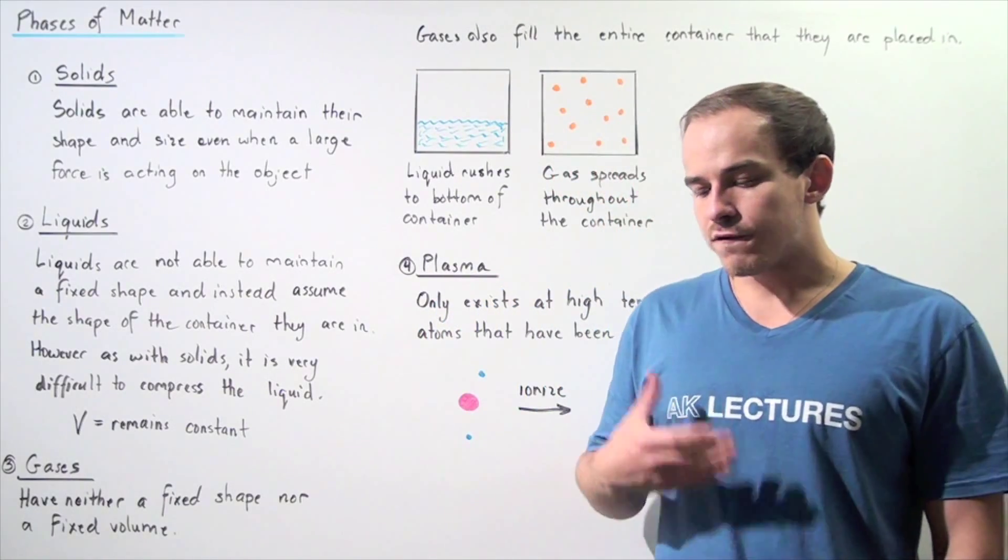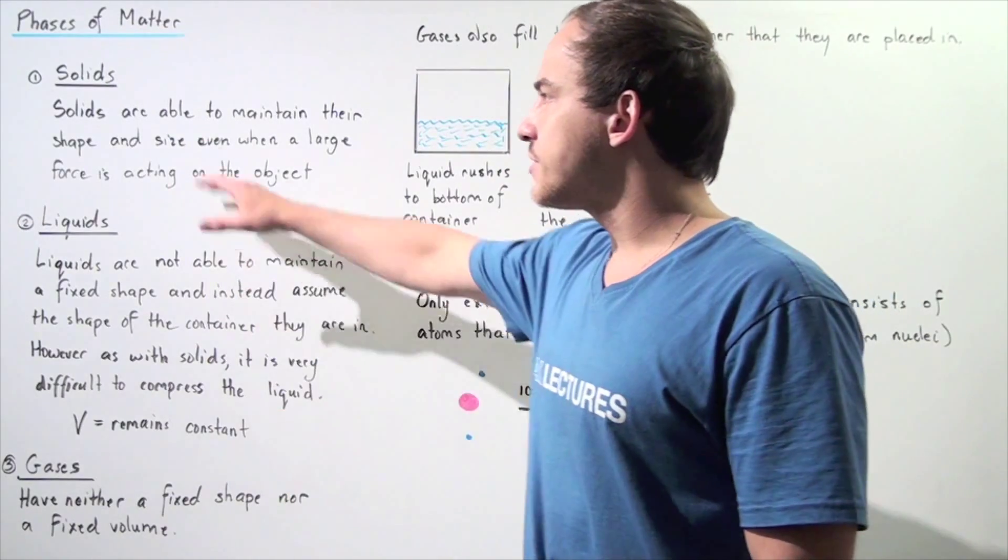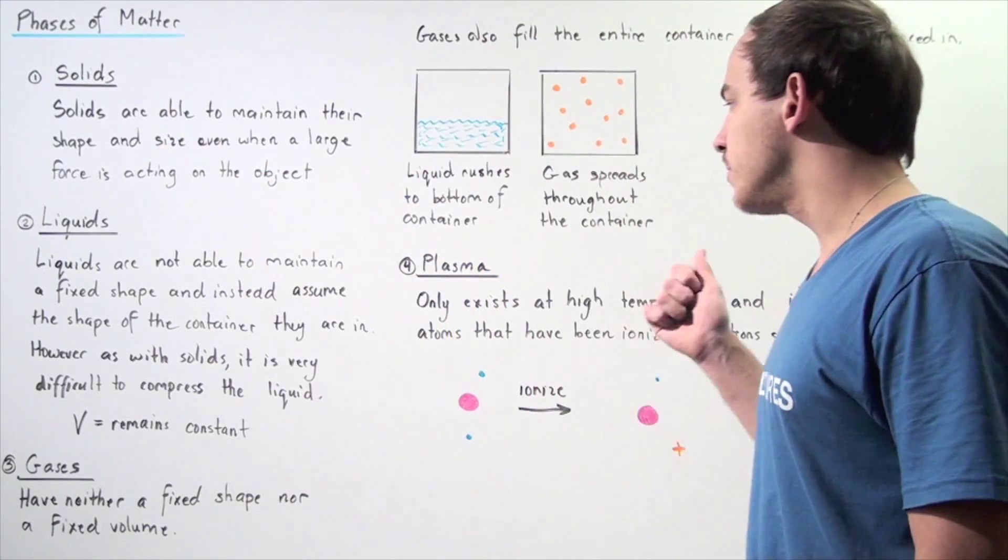Let us briefly look into the four different types of phases of matter, beginning with solids and ending with plasma.